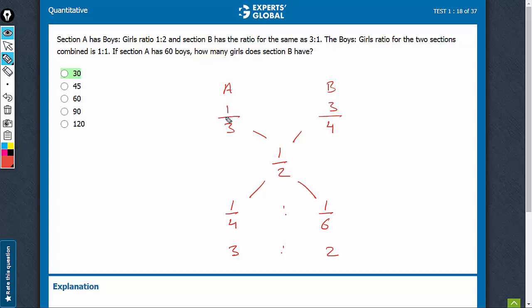1 out of 3 is the ratio of boys to girls. So, if it has 60 boys, it means Section A has total 180 students.